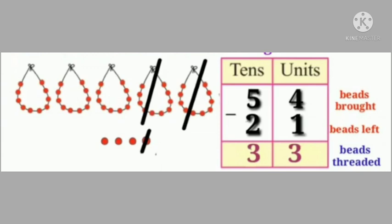Now in the tens column, 5 minus 2 is equal to how much? Yes, 5 minus 2 is equal to 3. So the answer is: Vaishali threaded 33 beads into the string.